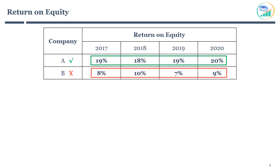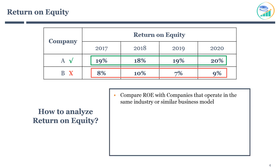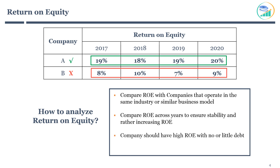As a stock investor, if you have the question of how to analyze return on equity, here are a few simple steps. You should always compare return on equity with companies that operate in the same industry or similar business model. Moreover, you should compare across years to ensure stability and a rather increasing ROE. Companies should have high return on equity with no or little debt, and you should typically look for companies with 15% or more before you consider investing. Please remember, a company that has 15% return on equity cannot increase its earnings faster than 15% annually without borrowing funds or selling more shares.